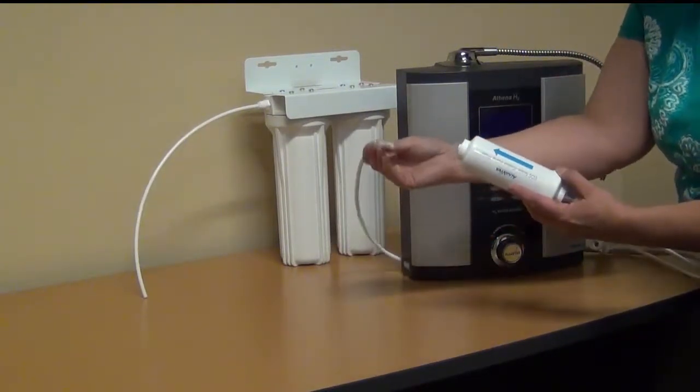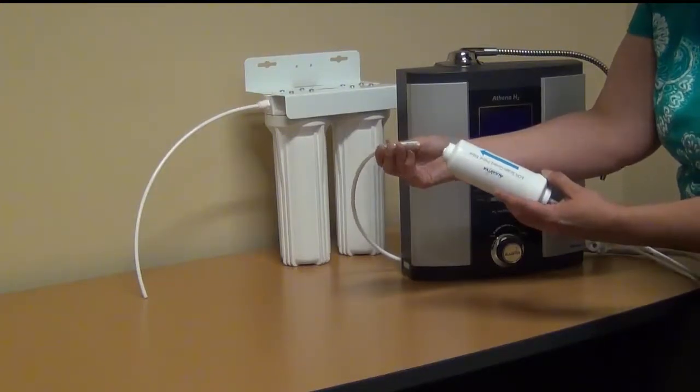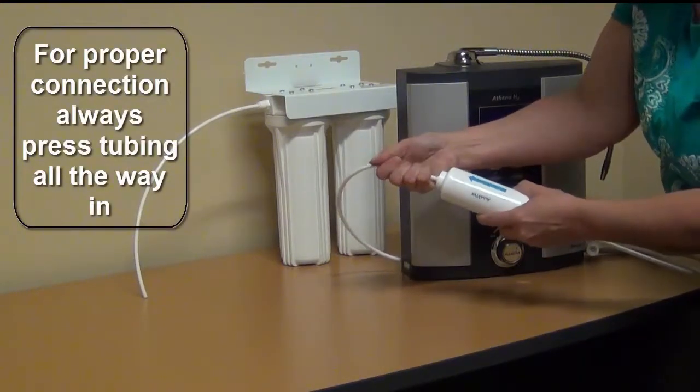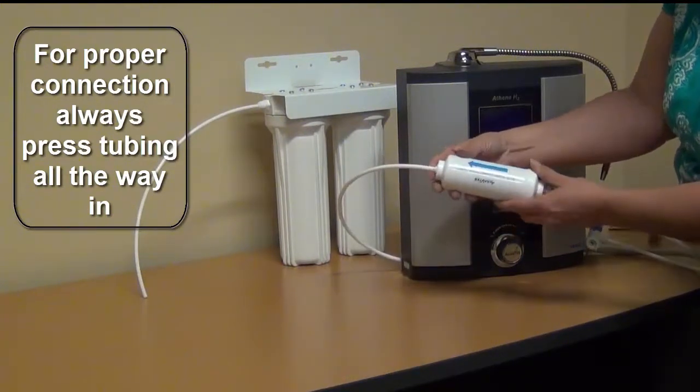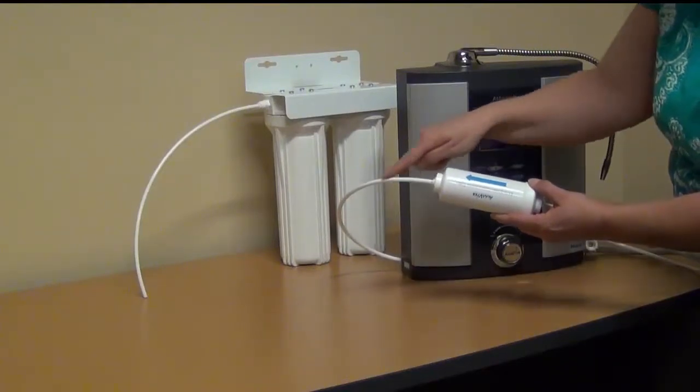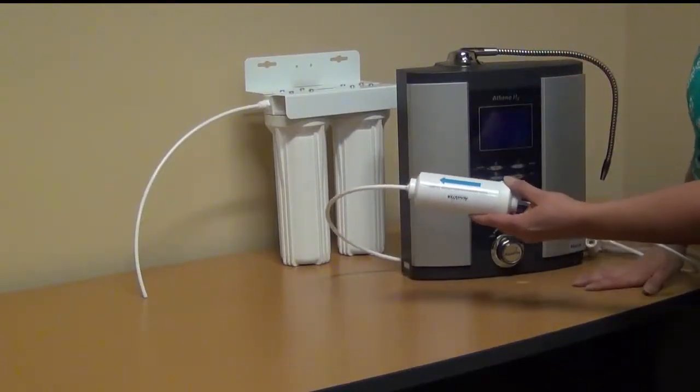The other tube, which is attached to your ionizer, will be installed in the other end. Make sure to press the tubing in all the way. So this is where the water comes out of the EOS and continues into your ionizer.